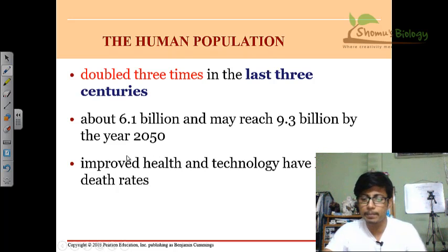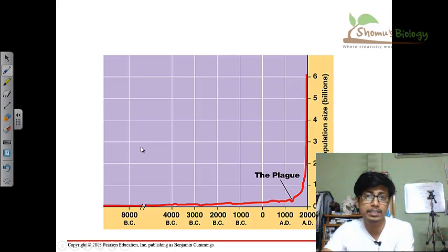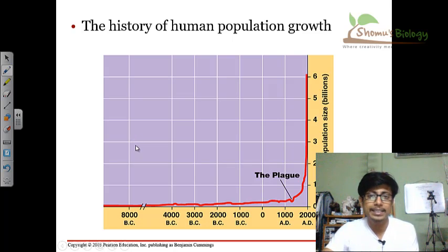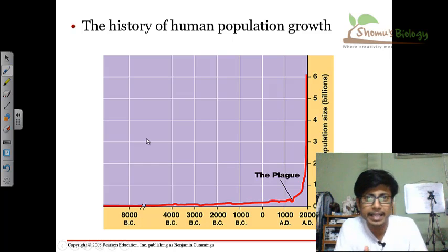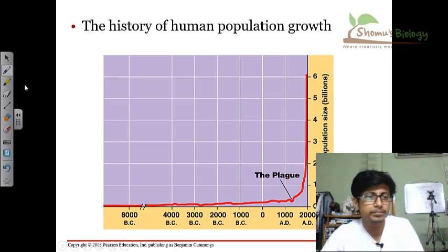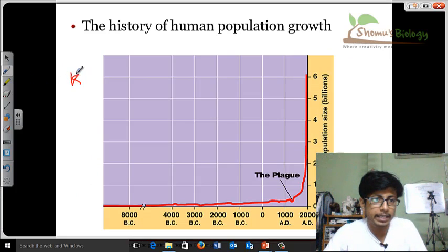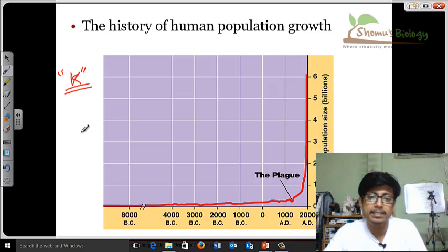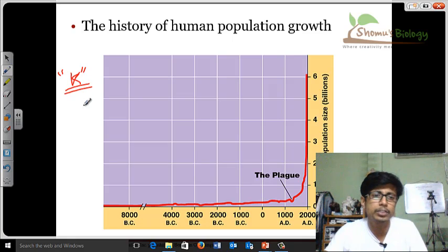These things are happening because of improved health as well as improved technology, giving us longer lives. But that will create difficulty because the environment has a carrying capacity. Carrying capacity is denoted with capital K, and it means the number of individuals an environment can support for their growth, based on food availability and all environmental resources.